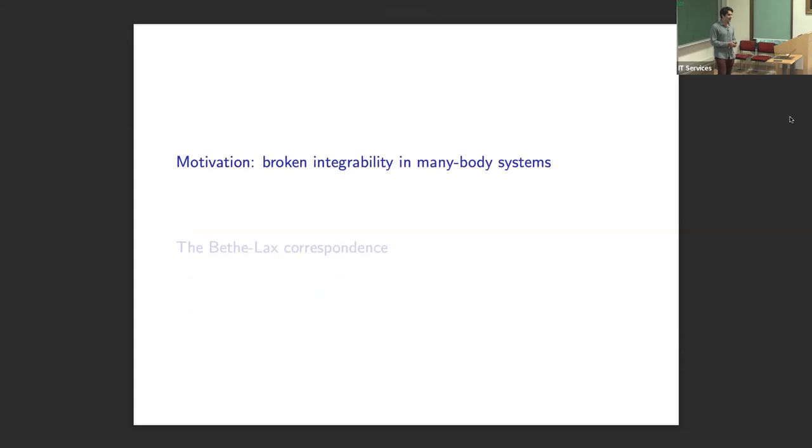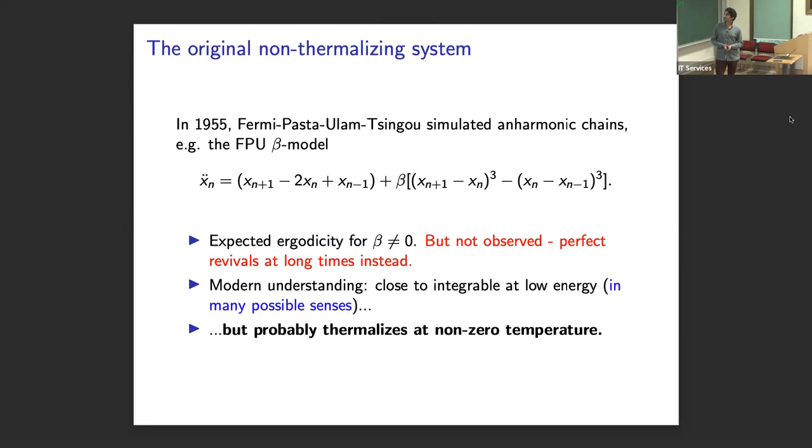Okay, so we've had four hydrodynamics introductions, all of which are excellent, as well as a thermalization introduction. So I'm going to give another thermalization introduction since I was torn between the two choices. So as all of you know, the original non-thermalizing system is the Fermi-Pasta-Ulam chain, which stimulated a lot of the advances in this field and has continued to provide a touchstone for developments in non-linear dynamics. Of course, the surprise was they expected ergodicity at non-zero energy and didn't observe it. They saw perfect revivals at long times instead.